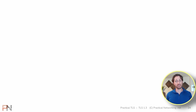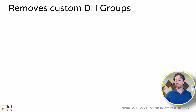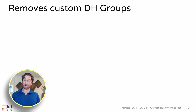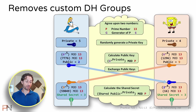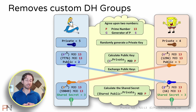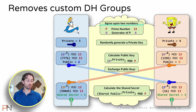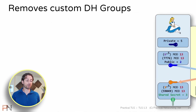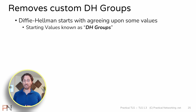The sixth change is that TLS 1.3 removes the possibility of doing custom Diffie-Hellman groups. To understand this, we need to define what a Diffie-Hellman group is. Back in Module 2, we went through the illustration of Alice and Bob doing the Diffie-Hellman math together. Before Alice and Bob could do Diffie-Hellman, they had to first agree upon two numbers: a prime number and a generator — in our example, 6 and 13. This starting point is known as a Diffie-Hellman group, and every Diffie-Hellman calculation has to start with a mutually agreed starting point.